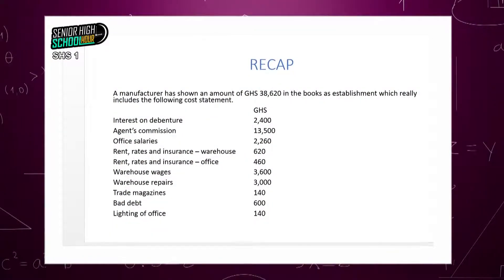A manufacturer has shown an amount of $38,620 in the books as establishments, which includes the following cost elements. Take your pens and your notebooks and jot them down. After writing them, try and indicate where each falls — whether it's an overhead or a prime cost. Then look at the requirements of the question, which will help us to group our cost elements.